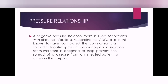A negative pressure isolation room is used for patients with airborne infections. According to CDC, a patient known to have contracted coronavirus can spread it person to person. A negative pressure isolation room is therefore designed to help prevent the spread of disease from infected patients to others in the hospital. The room must be at negative pressure, meaning outside air will flow toward the isolation room and no air will flow from the isolation room to other facilities. This is the most important term in HVAC design for hospital facilities, especially for coronavirus.